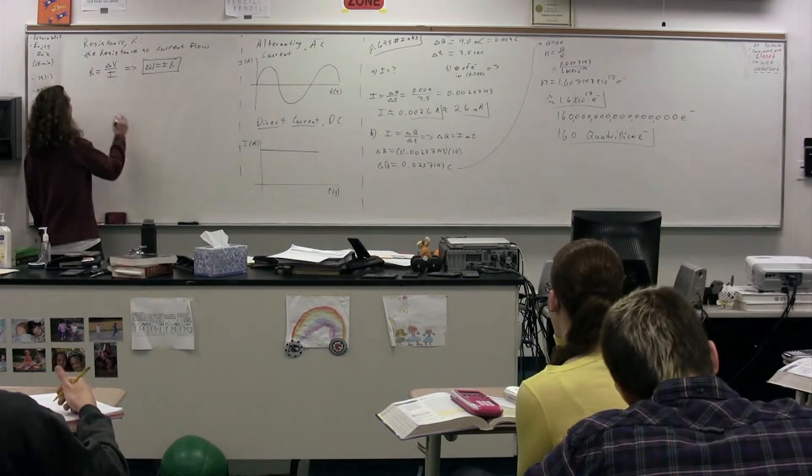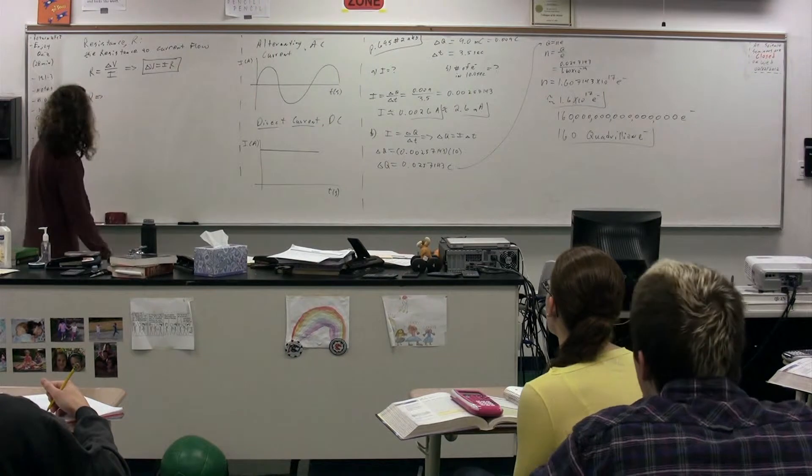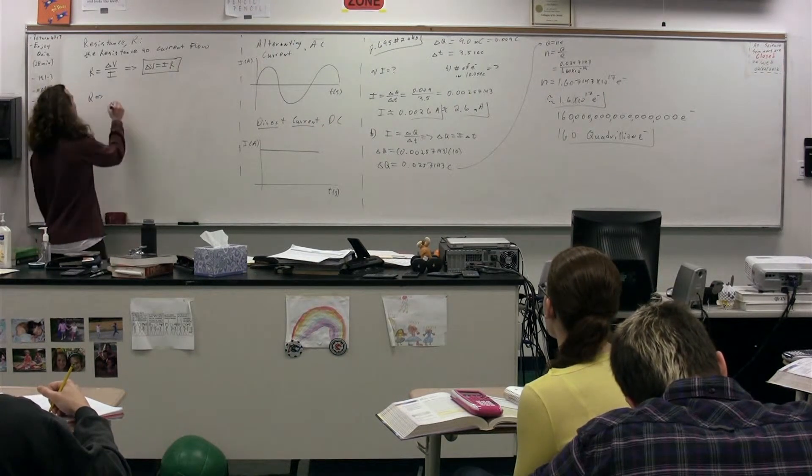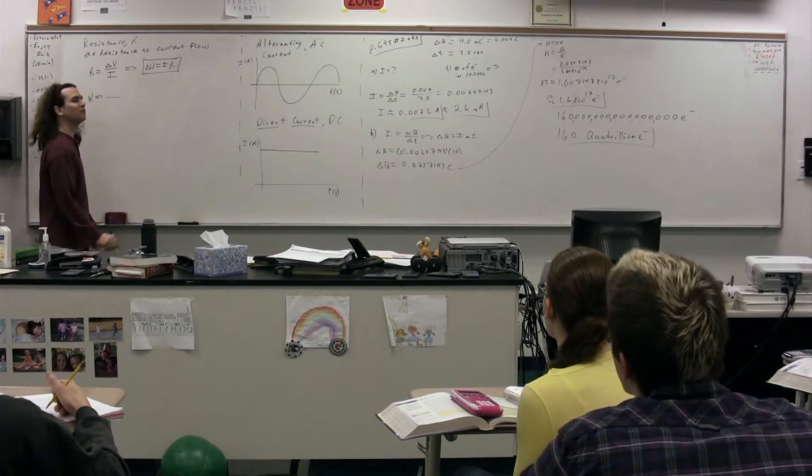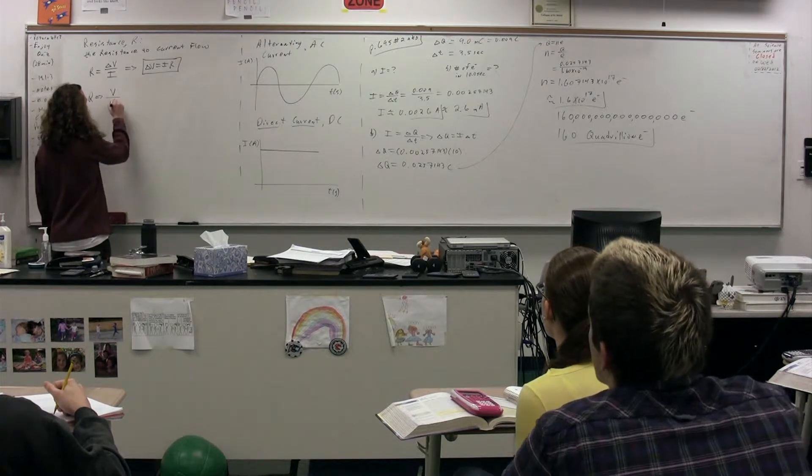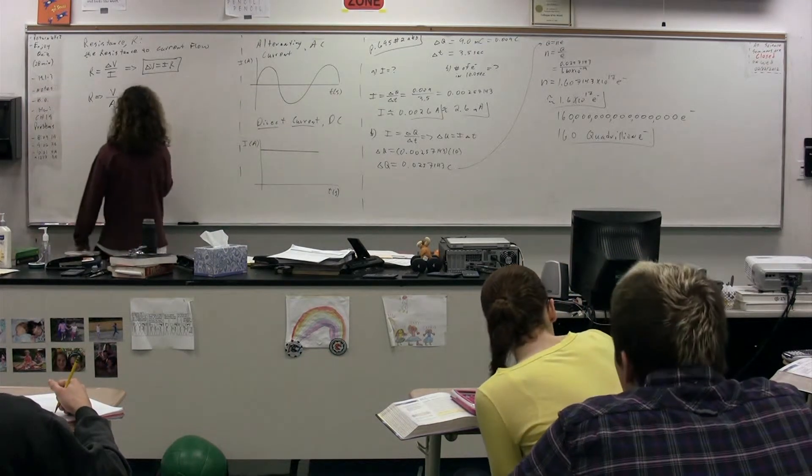Now, what are the dimensions on resistance then? Akbar, electric potential difference? Volts, current, and volts per amp. Now, we have a special name for volts per amp.